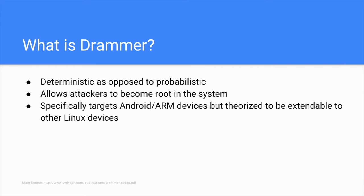Whenever a block of memory is released, the buddy allocator searches for neighboring blocks of the same size to merge. The key observation by Vusec et al. was that by massaging memory in a clever way — exhausting all large chunks of contiguous memory, releasing them, and quickly reallocating them into smaller memory blocks — it is possible to make the Rowhammer attack deterministic. Once a vulnerable location in memory is found, attackers can mount an attack similar to the Google Project Zero exploit. Instead of spraying memory with page tables, DRAMMER allows the attacker to flip a bit at a particular offset in the page table, make it point to their own page table, and achieve read-write access on all of memory, including kernel memory.